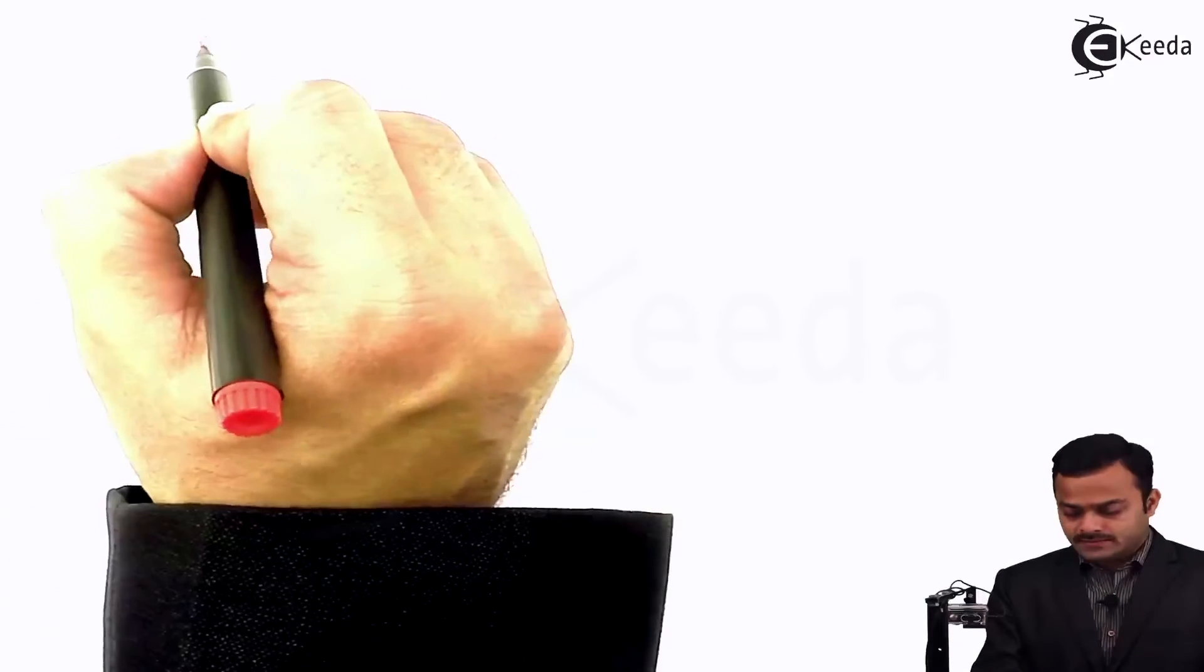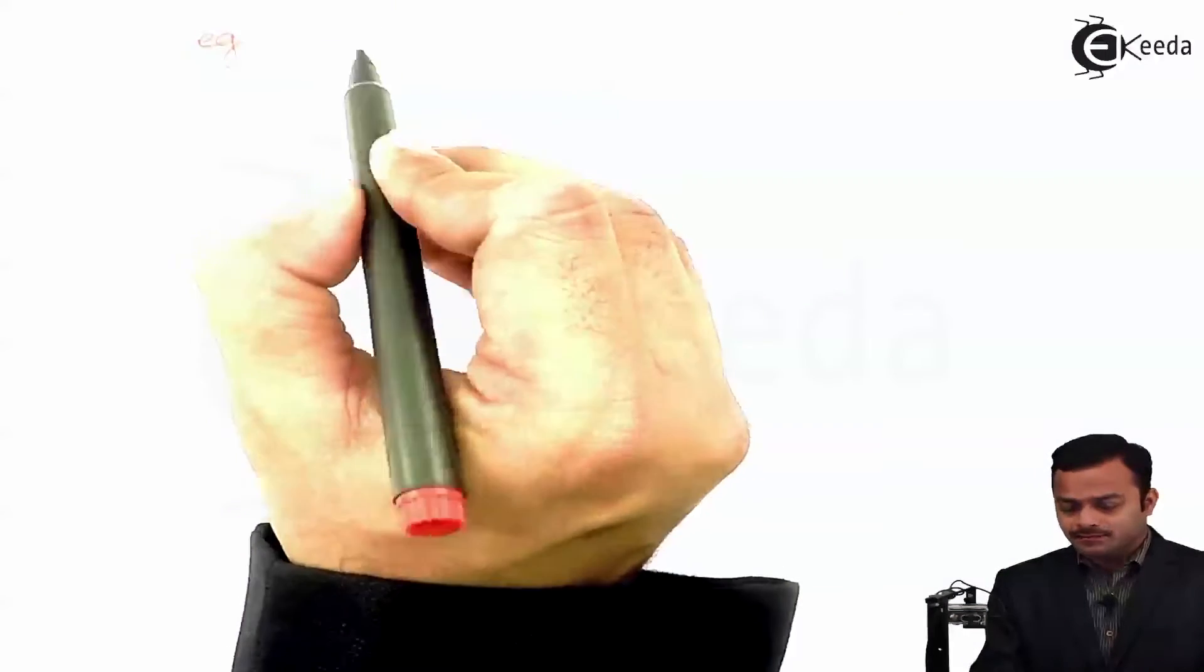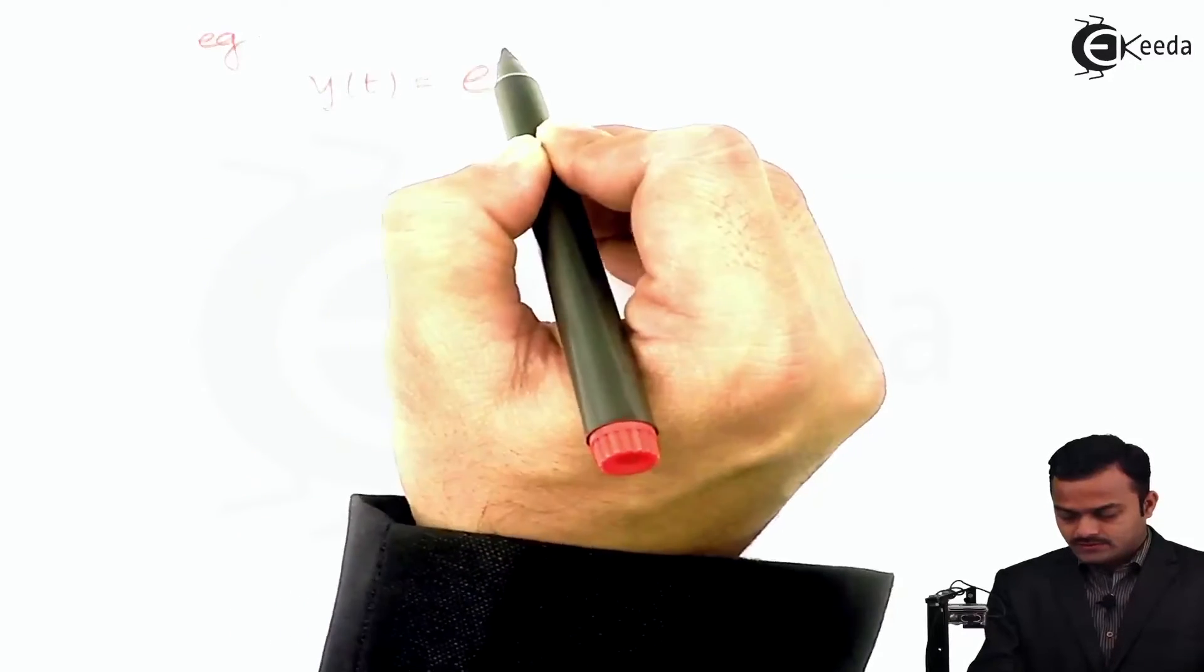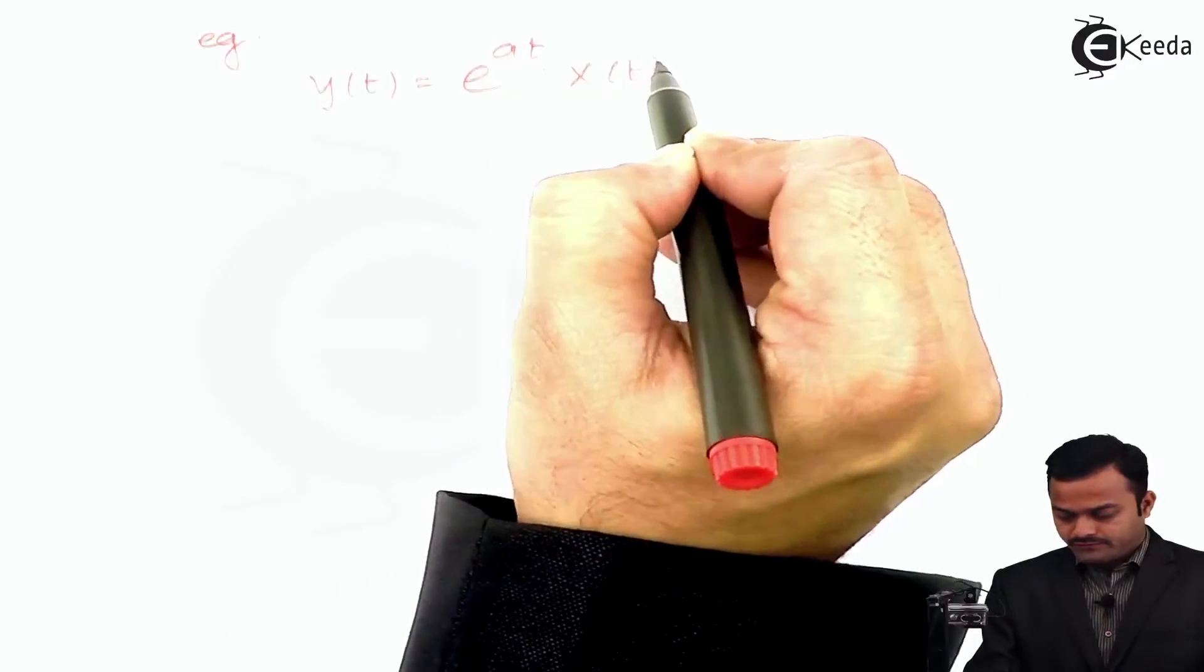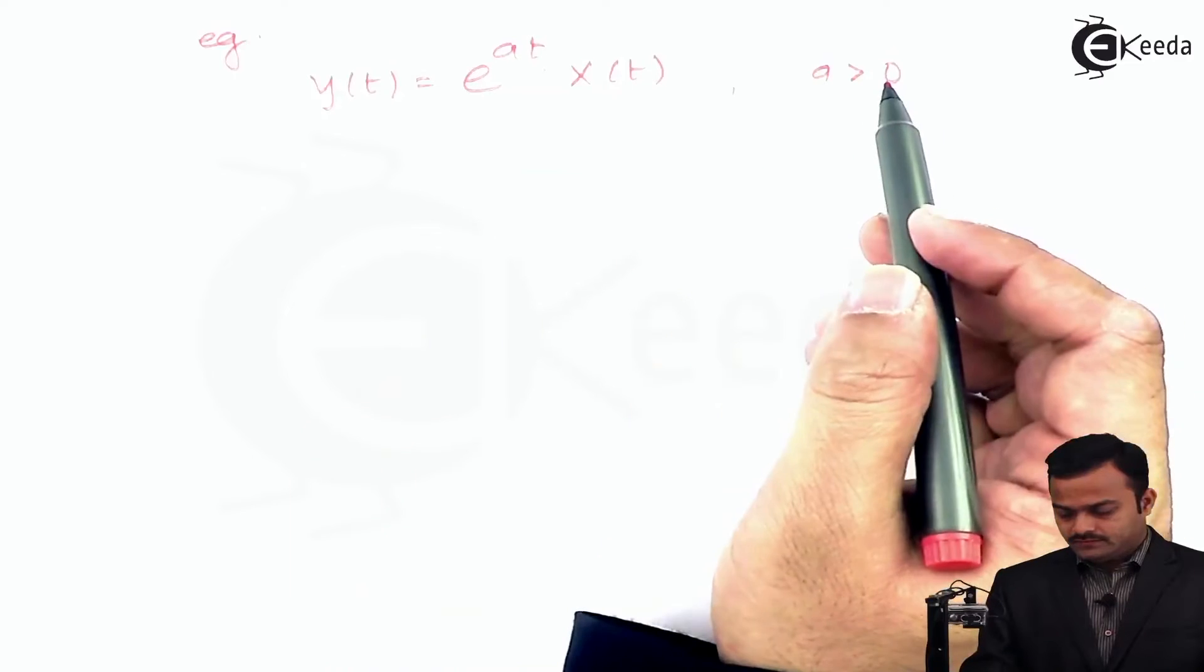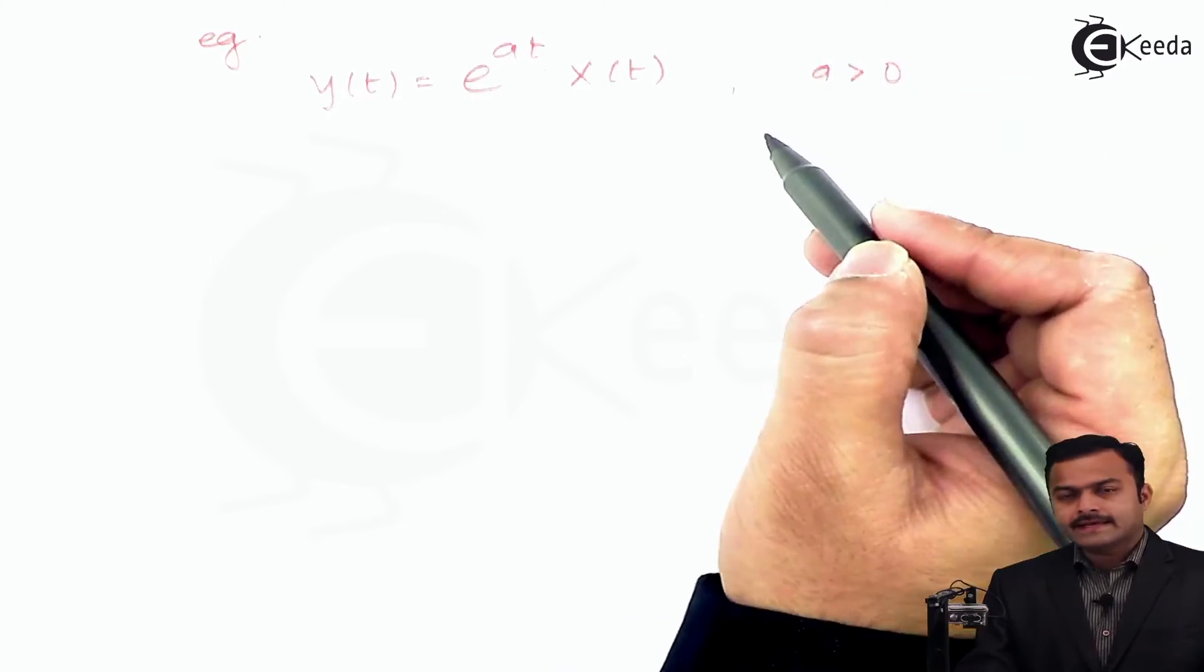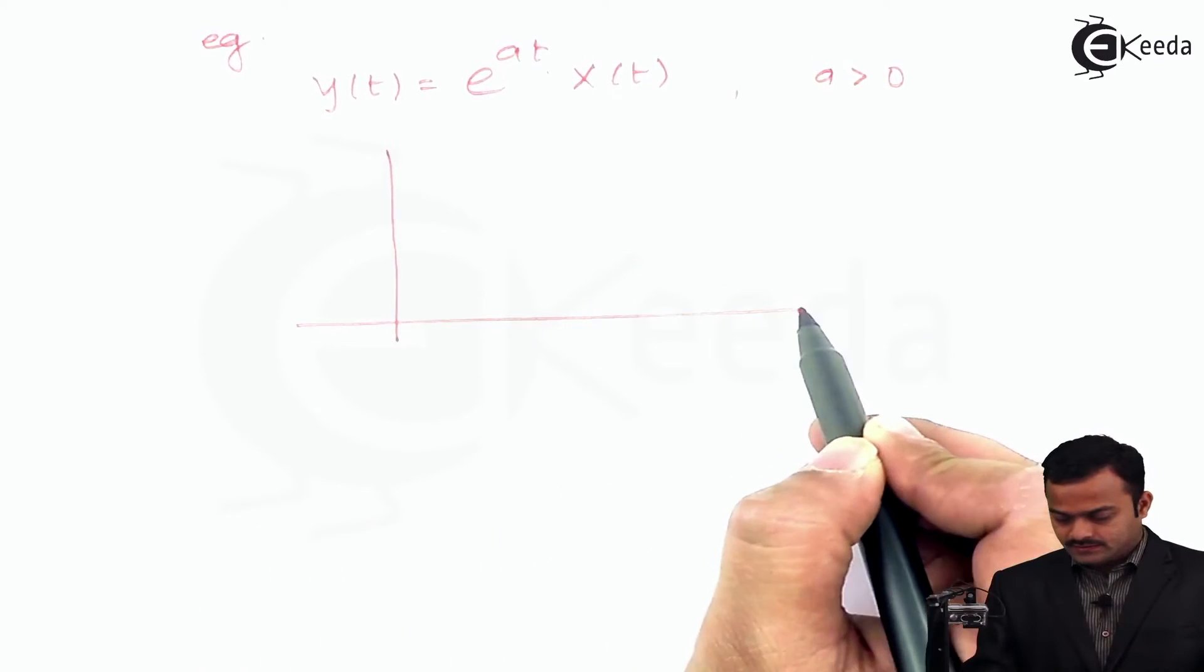The example for an unstable system will be like this. A slight change I will make to the previous example. Let's have y(t) as e^(at) x(t), and I am assuming a is a positive value. If you plot this, I can say y(t) will be like this.